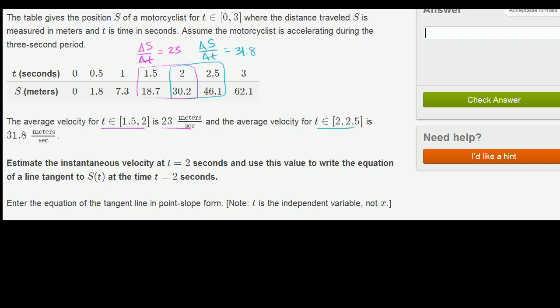So we can try to approximate the slope of the tangent line right when t equals 2 seconds by taking the average of the slopes between 1.5 and 2 and between 2 and 2.5. So essentially, to approximate the slope of the tangent line, we're going to take the average of these two rates of change.